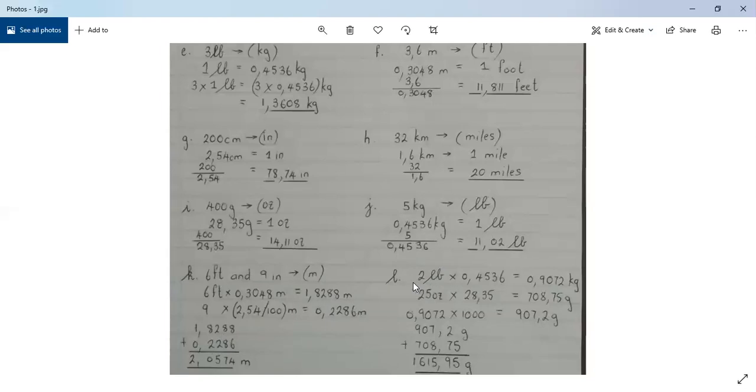We now move on to question 4l, where we are given 2 pounds and 25 ounces. And the final unit that is required is in grams. So again, we convert 2 pounds to kilograms. And we know from the previous example, 1 pound is 0.4536 kilograms. When we multiply 2 and 0.4536, we get 0.9072 kilograms.